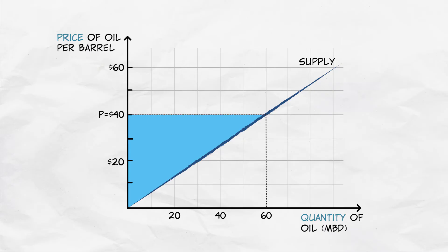We can calculate these areas using the formula for the area of a triangle, one-half base times height. So in this instance, producer surplus is one-half times the base, or the quantity of barrels sold, times the height, or the price of oil.